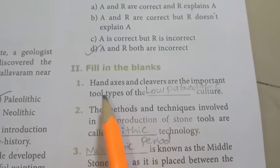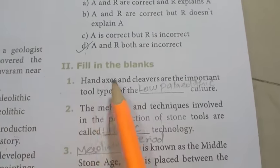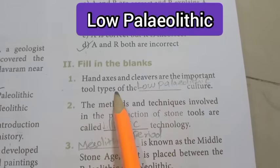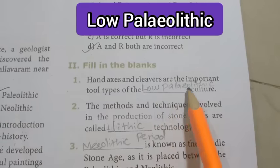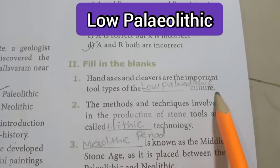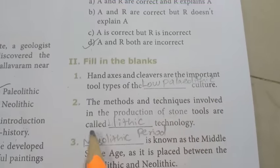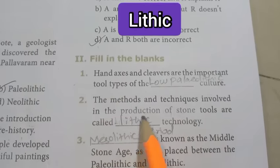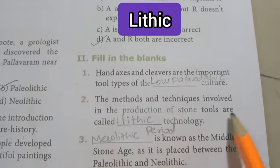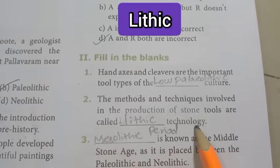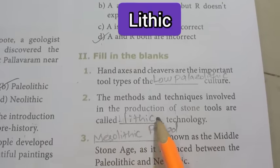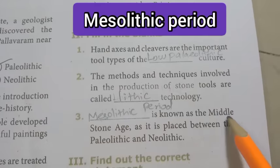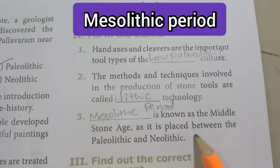Moving to Roman numeral II, Fill in the blanks. First one: hand axes and cleavers are the important tool types of the Lower Paleolithic culture. Answer is Lower Paleolithic. Second: the methods and techniques involved in the production of stone tools are called Lithic Technology. Answer is Lithic Technology.